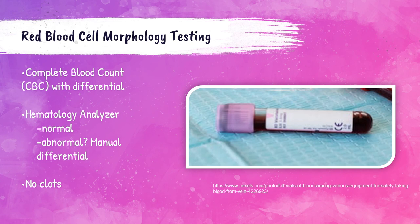Now that we know why we need to understand normal and abnormal morphology of red blood cells, how do we test for it? This is performed on an EDTA tube, a lavender top tube, in something we call a complete blood count with differential, frequently abbreviated as CBC with diff. It's run on a hematology analyzer, and if the analyzer detects that everything is normal, it can be auto-reported if the laboratory has auto-verify enabled. If it's abnormal, it oftentimes requires a manual differential, and this is where a peripheral blood smear needs to be made of the patient's sample.